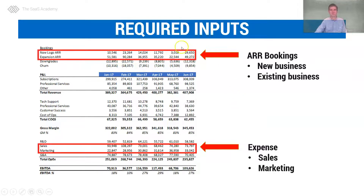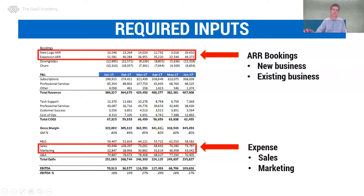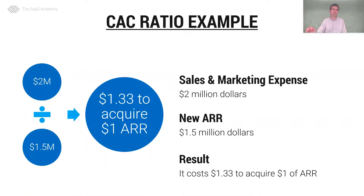So where do we find the required inputs? If we look at our SaaS P&L, I like to have a booking summary at the top of the page where we track new and expansion ARR. This is where we find our expansion and new ARR on the P&L, or more likely from your CRM system. For the expense side, we look at the sales and marketing areas in our OpEx section and pull that data into the formula.